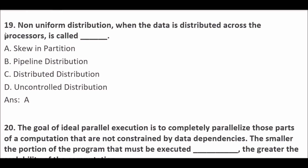Non-uniform distribution when the data is distributed across the processors is called — blank space. Option A: Skew in partition. Option B: Pipeline distribution. Option C: Distributed distribution. Option D: Controlled distribution. Right answer is Option A — Skew in partition. This is a very important question.